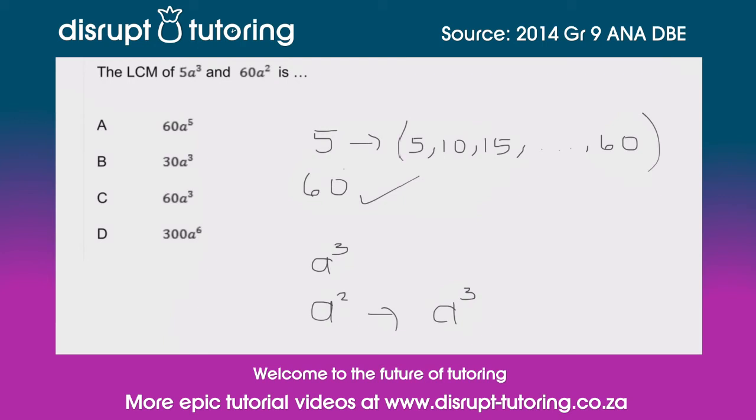So if we combine those two answers together, our eventual answer is going to be 60 from a numbers perspective and a³ from a letters perspective. That therefore means that the answer to this question is C.